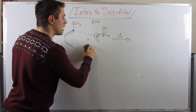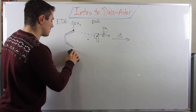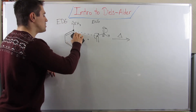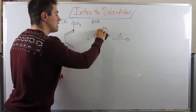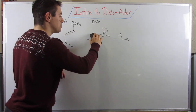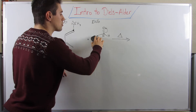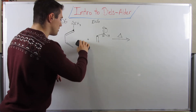Let's get towards predicting the product. As you've seen, our diene and dienophile are matched up, and that's a good thing. That means we're ready to go and ready to predict our product.